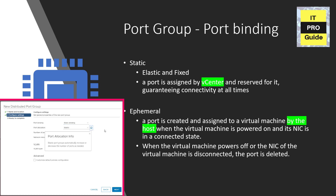In static port binding, you have fixed port and elastic port options. With a fixed port, you specify the number of ports you want to use for that port group. For example, if you specify three ports and then a fourth virtual machine needs an additional port — more than three ports are required — when you try to assign that new virtual machine to this port group, you will get an error that no free port is available.